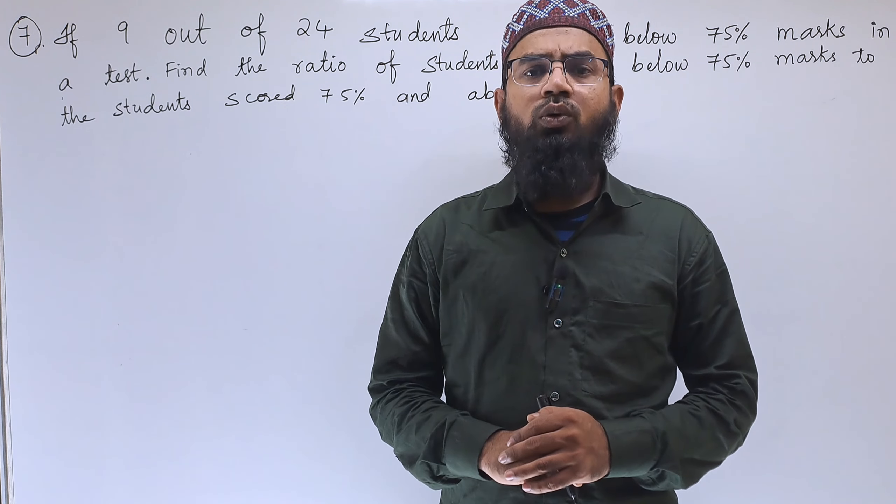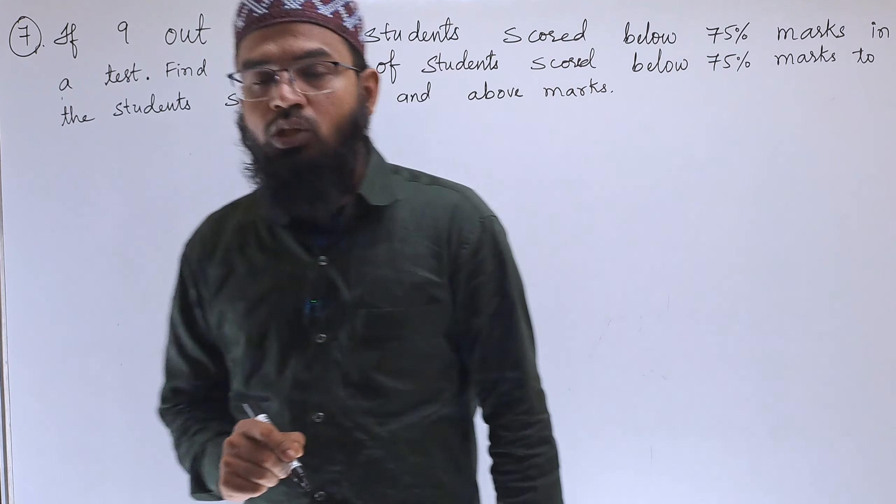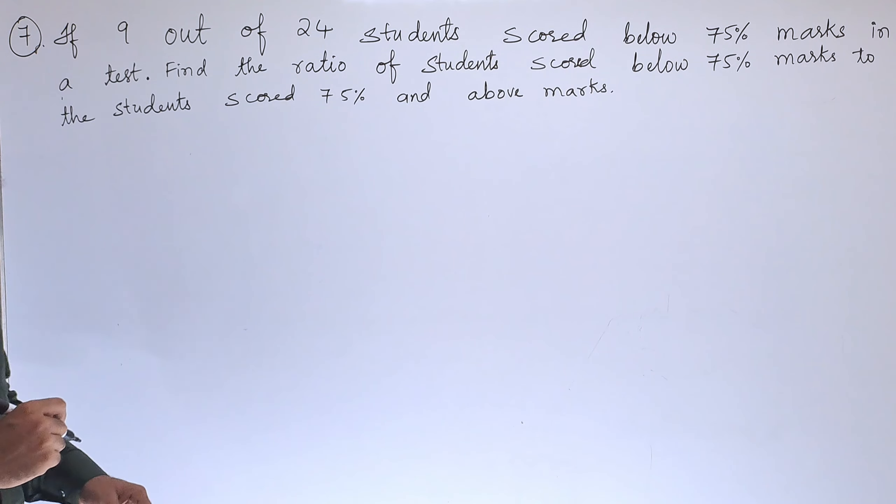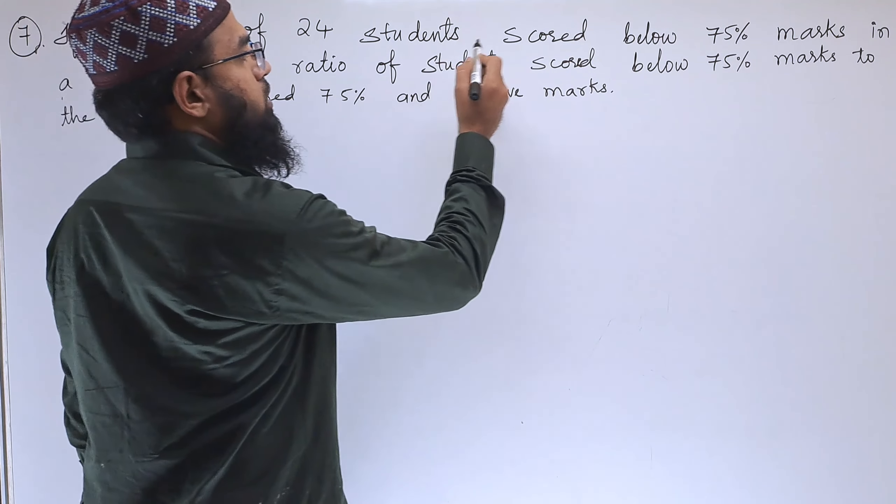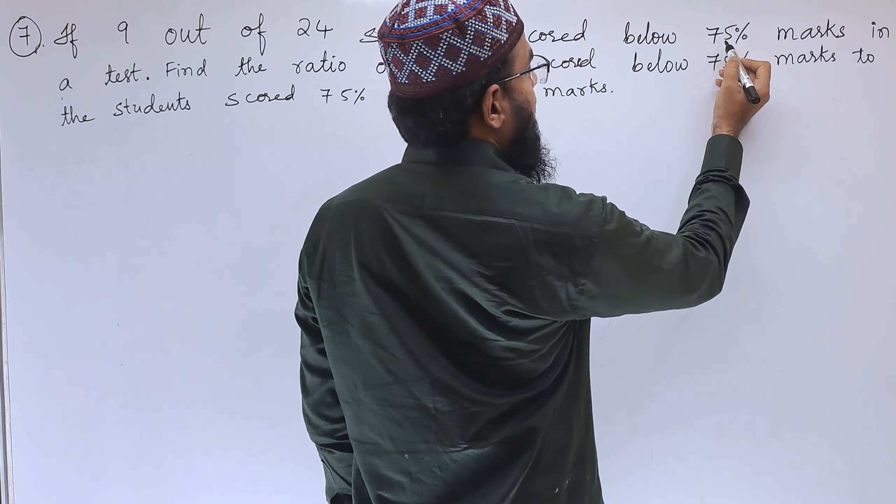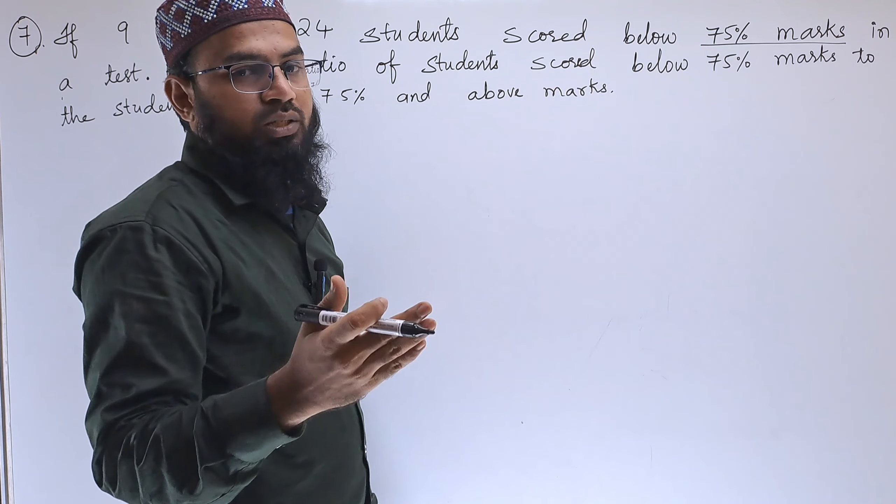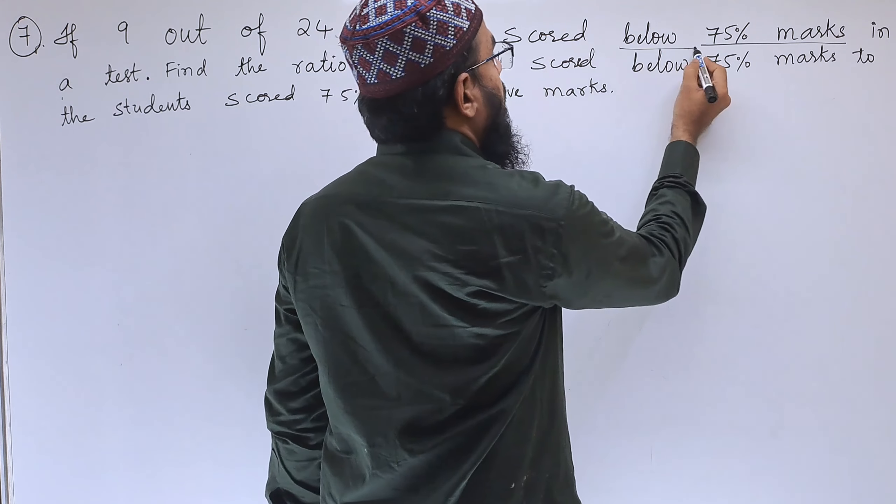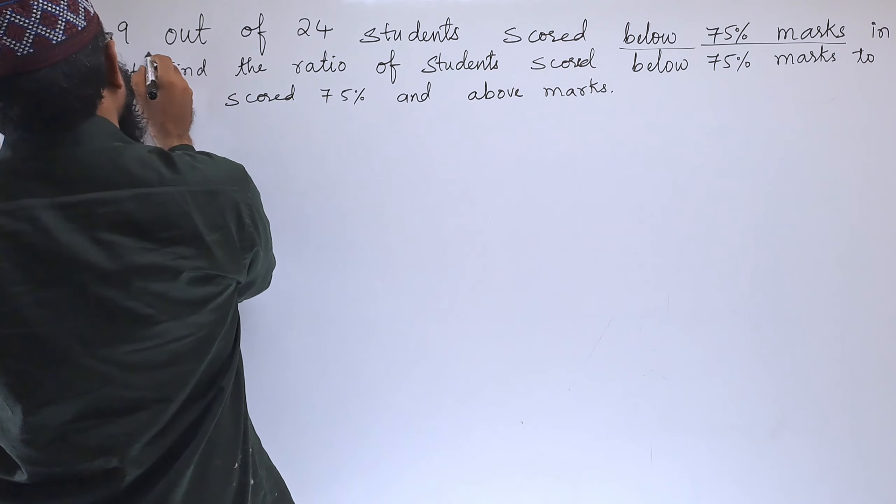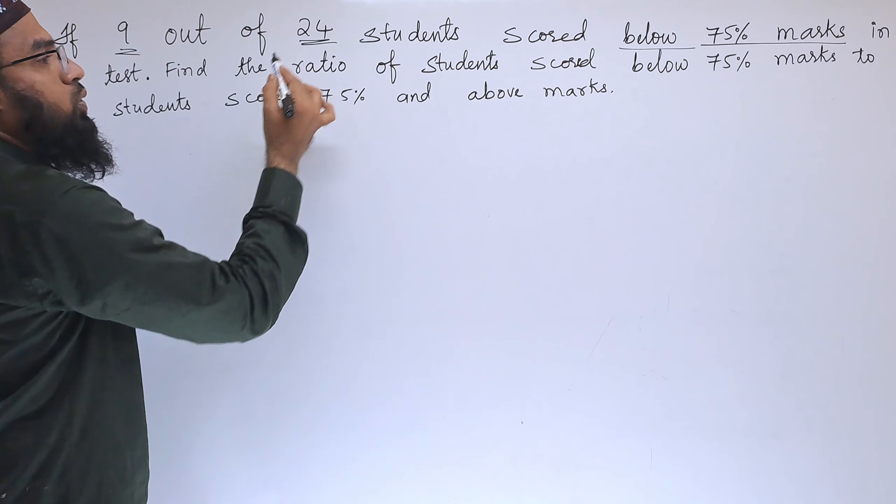In this video, you are going to learn the seventh problem. The problem states: if 9 out of 24 students scored below 75 percent marks, how many students scored less than 75 percent? Nine students out of 24, which means the total number of students is 24.